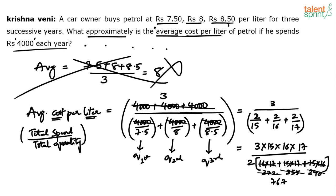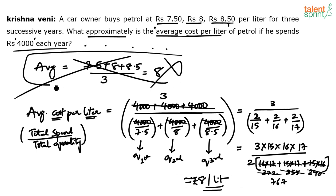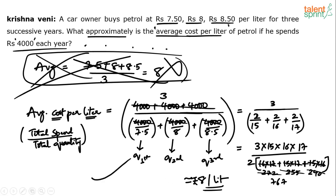Dividing 3 into the calculation and dividing by 1534 gives approximately 8 rupees per liter — or more precisely around 7.9 rupees per liter. So don't mistake the direct arithmetic average of 8 as the answer; after full simplification you get approximately 7.9 rupees per liter.